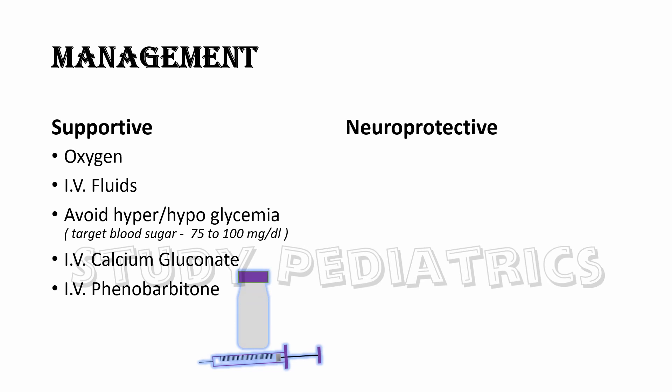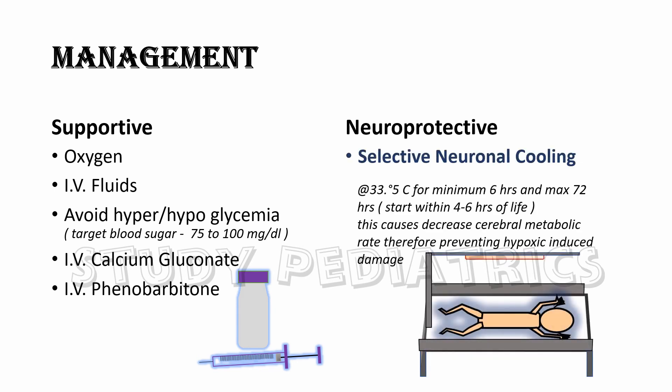Neuroprotective therapy includes cooling of the body or head to 33.5 degrees Celsius for a minimum of 6 hours and a maximum of 72 hours, to cause a decrease in the metabolic rate of the brain cells, hence decreasing their oxygen demand. This helps the brain cells to survive in bare minimum conditions.